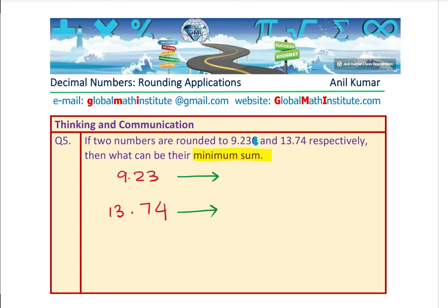So the minimum sum — the lowest number: 9.225, since 5 will round it up to 9.23. Same is the case here: we have 13.735, which will round to 13.74. Get the idea — that is the sum which is required.